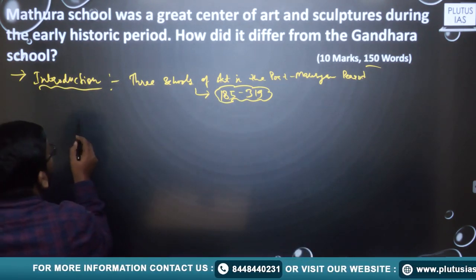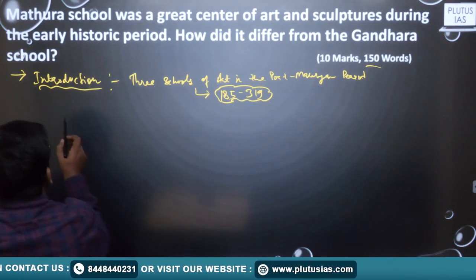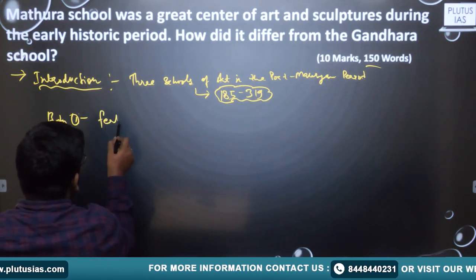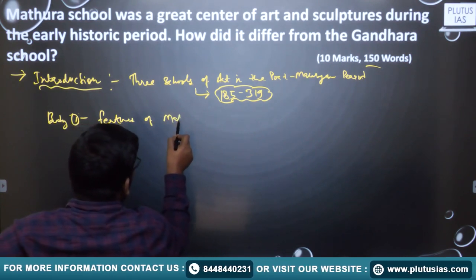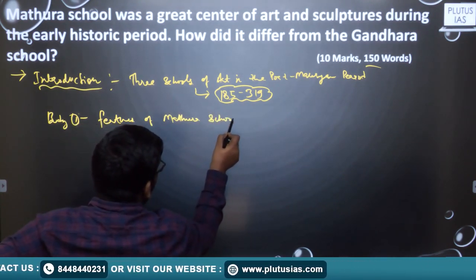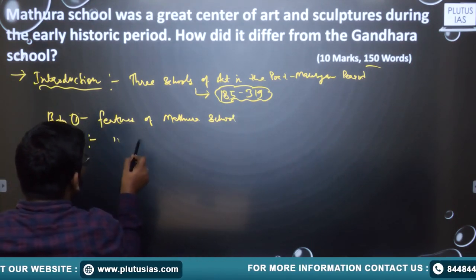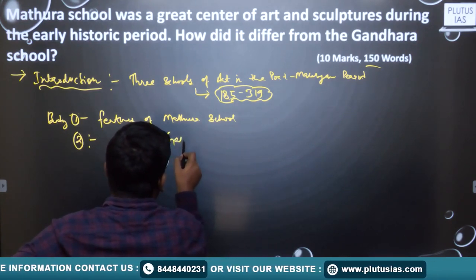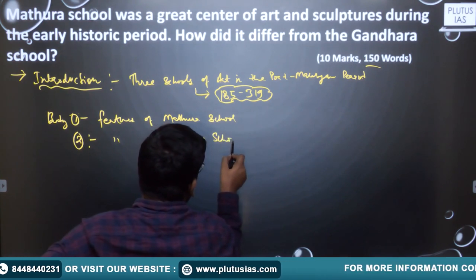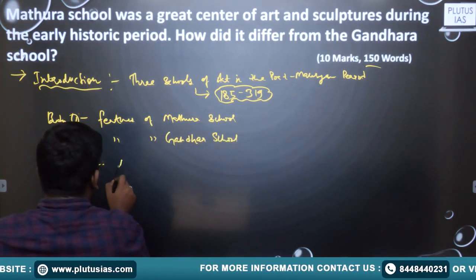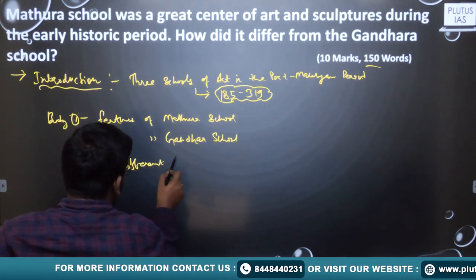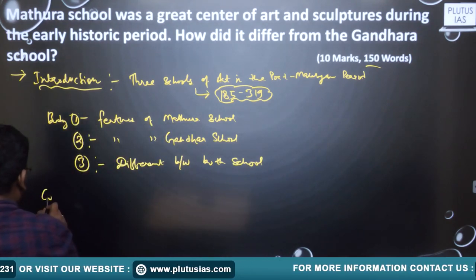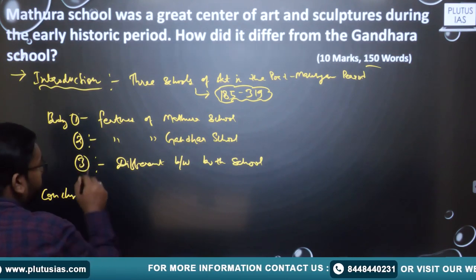After the introduction, we will write about three schools. The body will have: first, the features of Mathura school; second, the features of Gandhara school; third, the differences between them. And then we should write a conclusion. This is the way we should approach this question.